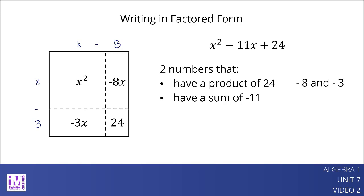So x squared minus 11x plus 24, written in factored form, is the quantity x minus 8 times the quantity x minus 3.